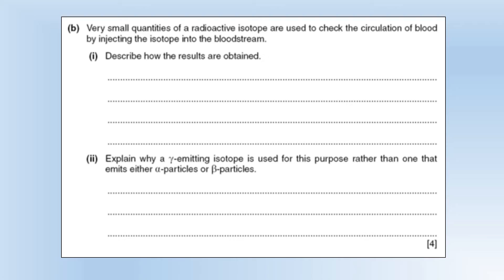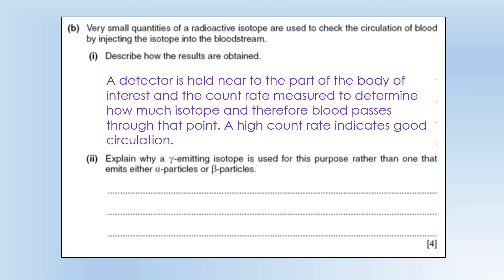So very small quantities of a radioactive isotope are used to check the circulation of blood by injecting an isotope into the bloodstream. Describe how the results are obtained. So a detector is held near to the part of the body, of interest,